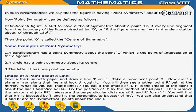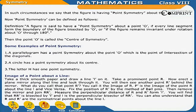In other circumstances, we see that the figure is having point symmetry about the point O. Point symmetry can be defined as follows. Definition: A figure is said to have point symmetry about a point O if every line segment from the boundary of the figure is bisected by O, or if the figure remains invariant under rotation about O through 180 degrees. Then the point O is called the center of symmetry.